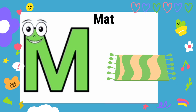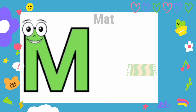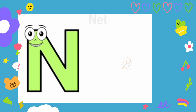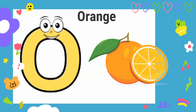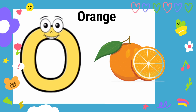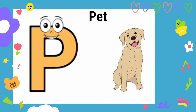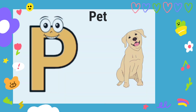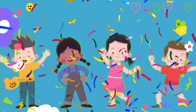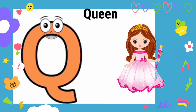M is for Matt, M-M-Matt. N is for Net, N-N-Net. O is for Orange, O-O-Orange. P is for Pet, P-P-Pet. Q is for Queen.